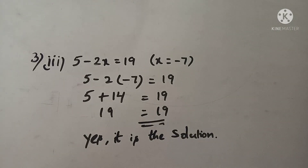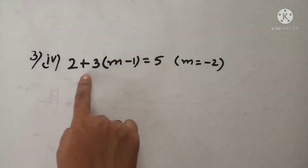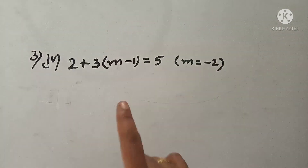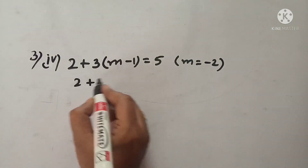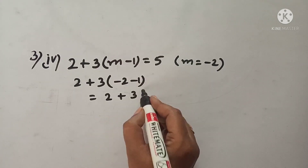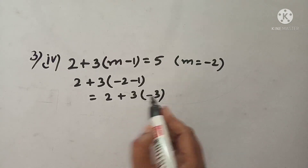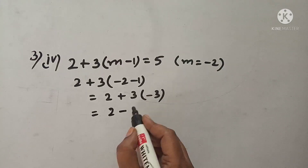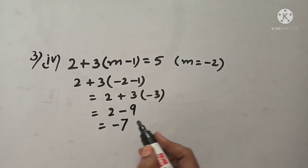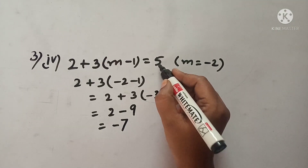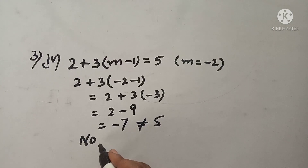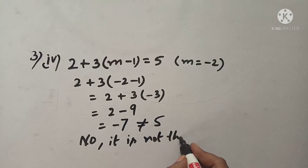Let's see question number 4: 2 plus 3 of m minus 1 is equal to 5, and m value is given as minus 2. Substitute minus 2: 2 plus 3 into minus 2 minus 1 equals 2 plus 3 of minus 3. That is 2 minus 9 which equals minus 7. But RHS is given as 5, so it is not the solution of the equation.